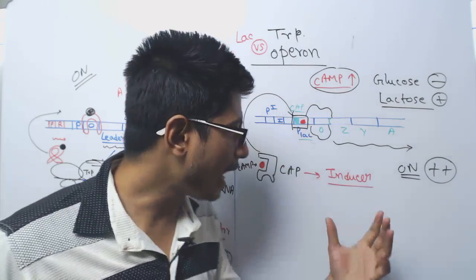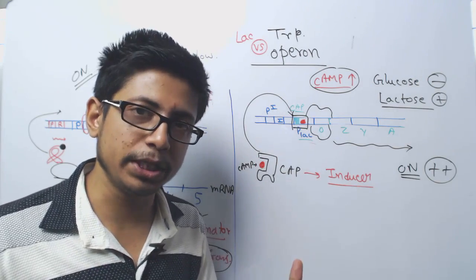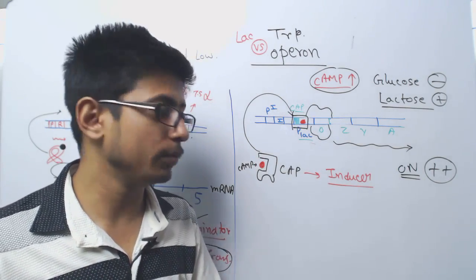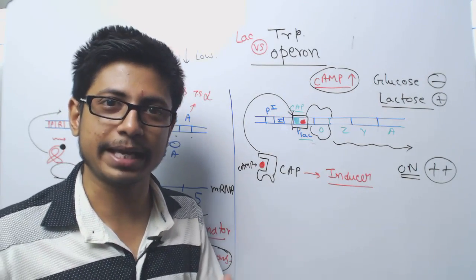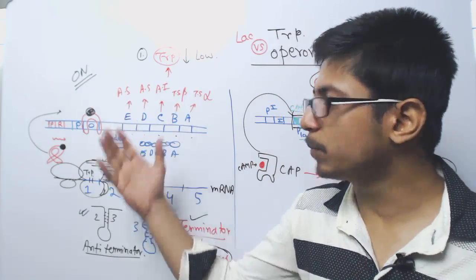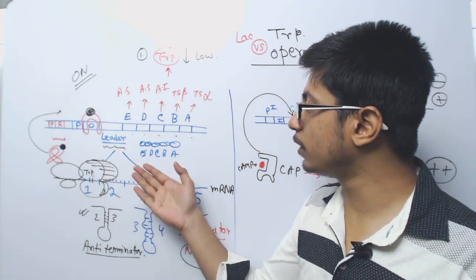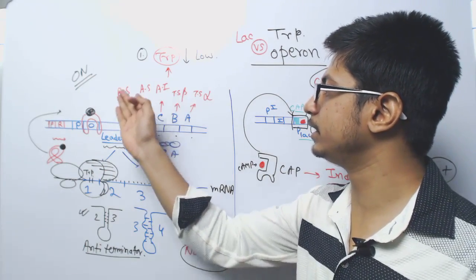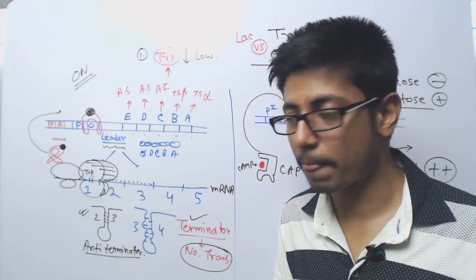Why? Because in lac operon, the idea is to break down lactose — to produce proteins which will break down lactose — and use lactose to drive energy through catabolic pathways. On the other hand, in tryptophan operon, the goal is to produce tryptophan. So in the tryptophan operon, we synthesize proteins that will ultimately synthesize tryptophan inside the cell.